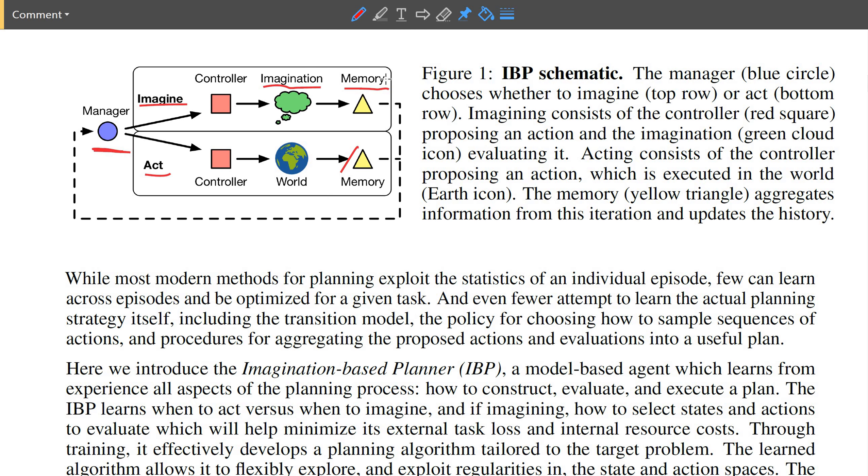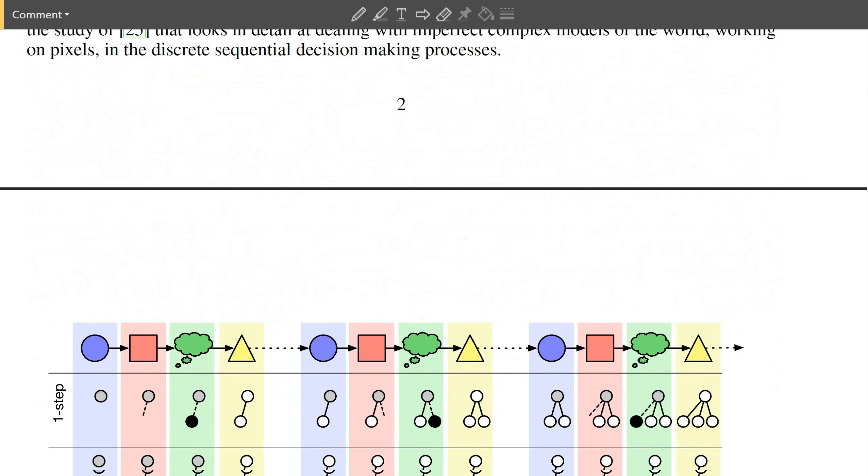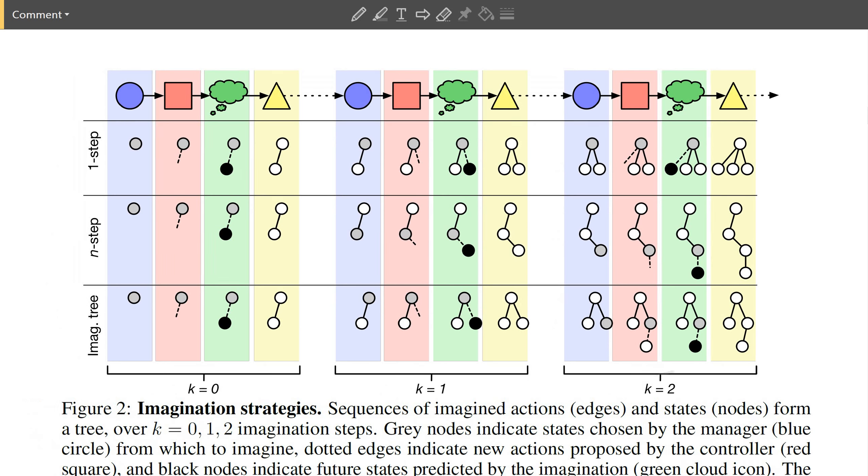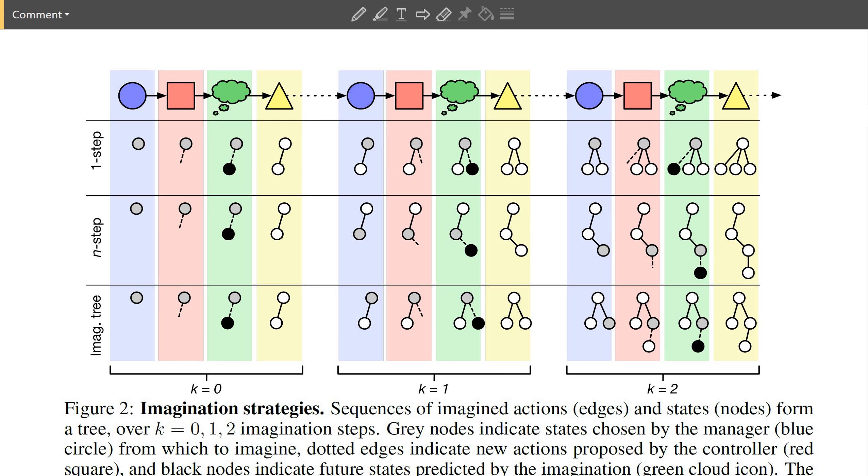The authors propose different methods of imagining. In this graph, you see the proposed methods. The first two methods, basically. If every row is a method of imagining, the first method, the one-step imagining, simply means you have the current state of the world, which is the gray blob here.